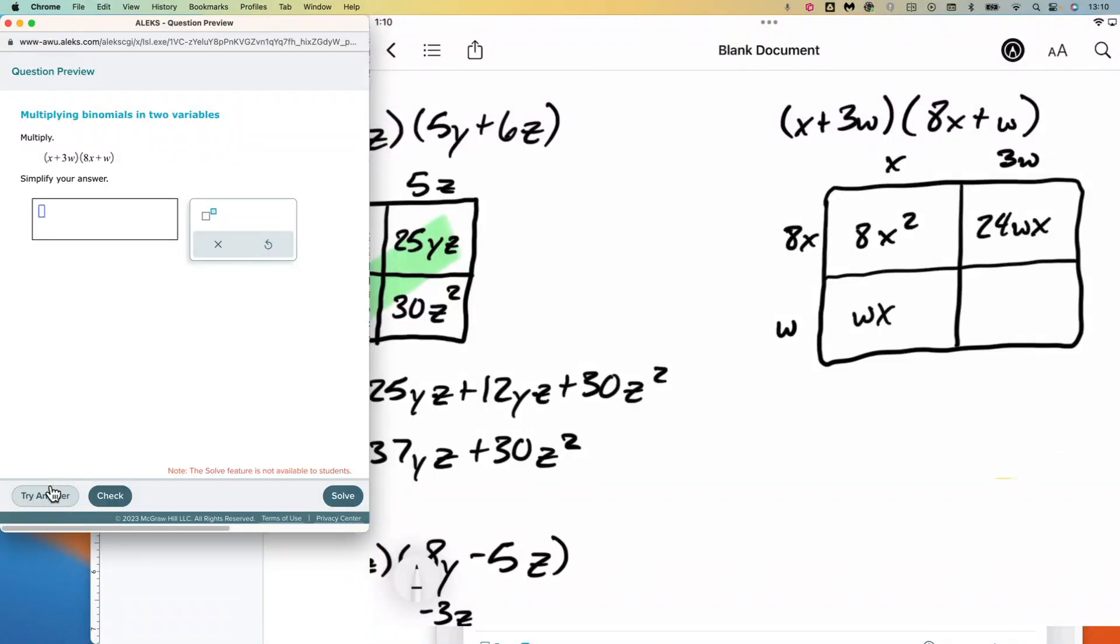W times 3w is going to be 3w². So we've got 8x² plus 24wx plus wx plus 3w². This gives us 8x² plus 25wx plus 3w².